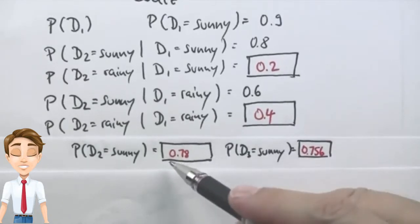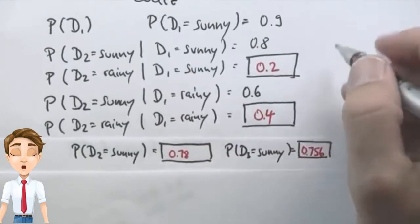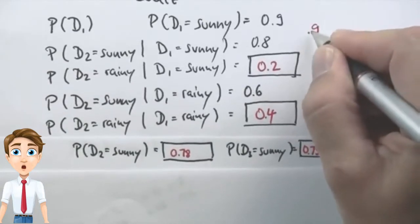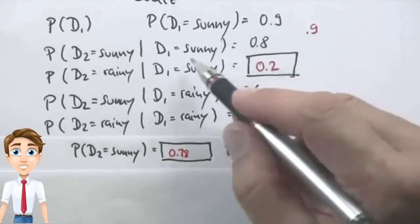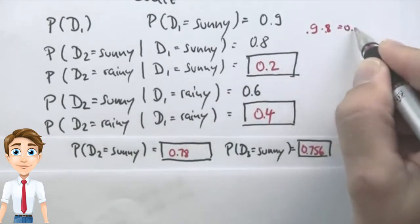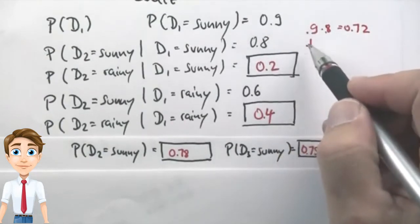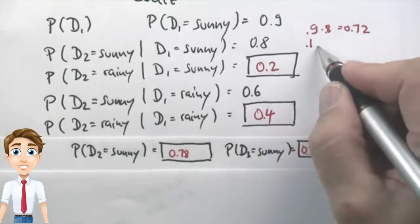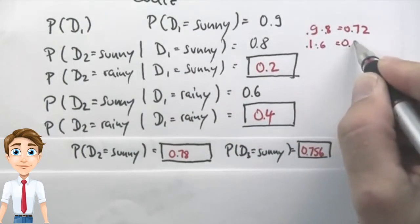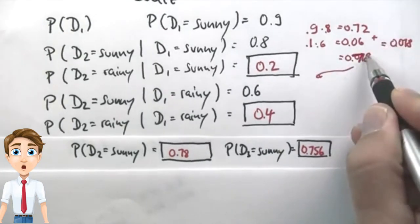To get there, let's complete this one first. Probability of D2 equals sunny. We know there's a 0.9 chance it's sunny on D1, and then if it's sunny, we know it stays sunny with 0.8 chance. So we multiply these two things together, we get 0.72. We know there's a 0.1 chance of it being rainy on day one, which is the complement. So if it's rainy, we know it switches to sunny with 0.6 chance. Multiplying those gives 0.06. Adding those two up equals 0.78.